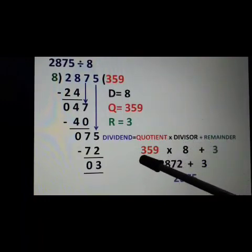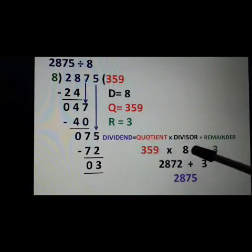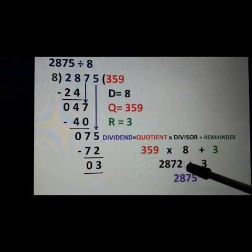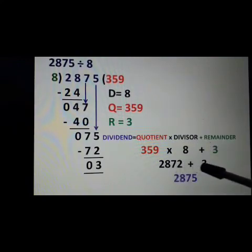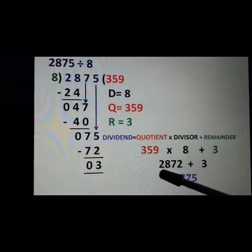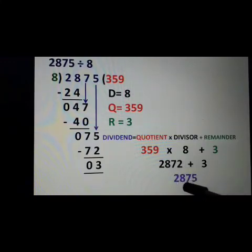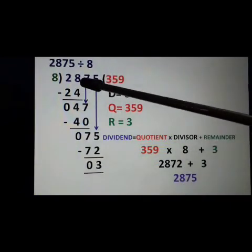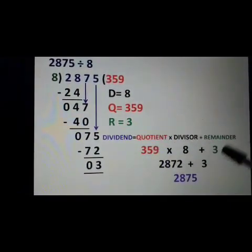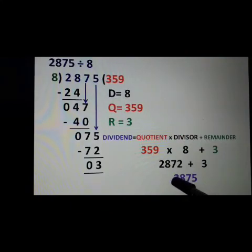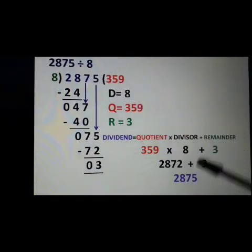If we multiply these two numbers: 359 into 8, we will get 2872. Plus 3 we will get 2875, and this is our dividend. After solving the formula, if the answer equals the dividend, that means our answer is correct.